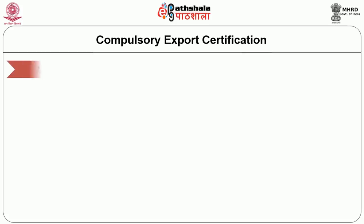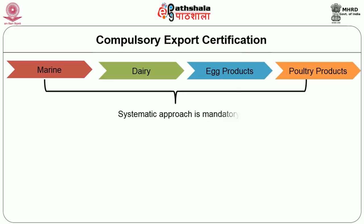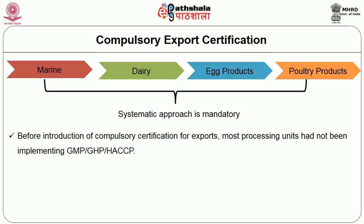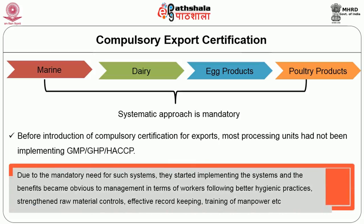Another requirement is compulsory export certification, gradually introduced for marine, dairy, egg products, and poultry products. The reason is that many diseases and pests may pass on to another country if certificates are not issued based on health aspects. Before introduction of compulsory certification for exports, most processing units were not implementing good manufacturing practices (GMP), good hygienic practices (GHP), and HACCP. However, due to the mandatory systems introduced, they have implemented good quality production systems, and now it is obvious everybody is following hygienic practices including for the raw materials. They also control production and give training to persons working in the manufacturing unit, and now they could achieve the quality aspects in the manufactured commodities.